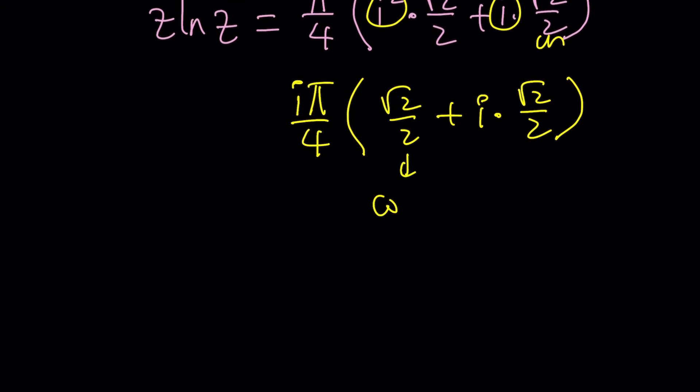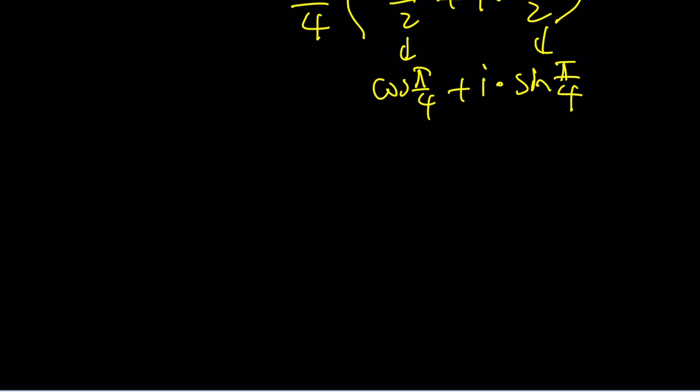Therefore this can be written in standard form like that. But in Euler's form how do you write it? You write it as, remember cosine θ plus i sine θ can be written as e^(iθ). So this would be e to the power i times π/4. Beautiful. And of course there is an i π/4 in the front.